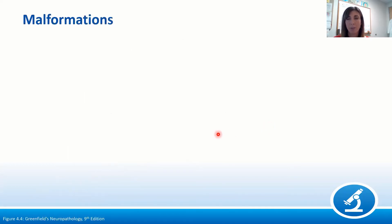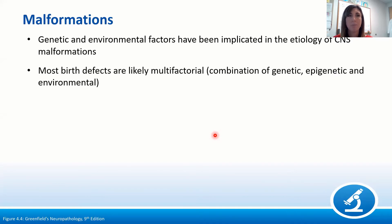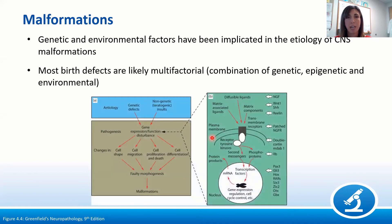What is a malformation? It's a primary disturbance of embryonic and fetal development, and it's important to distinguish these from disruptions and deformations — things caused by secondary compromises of development. Most of these are really due to a combination of factors: genetic, epigenetic, and environmental factors, all combining to produce a certain phenotype.